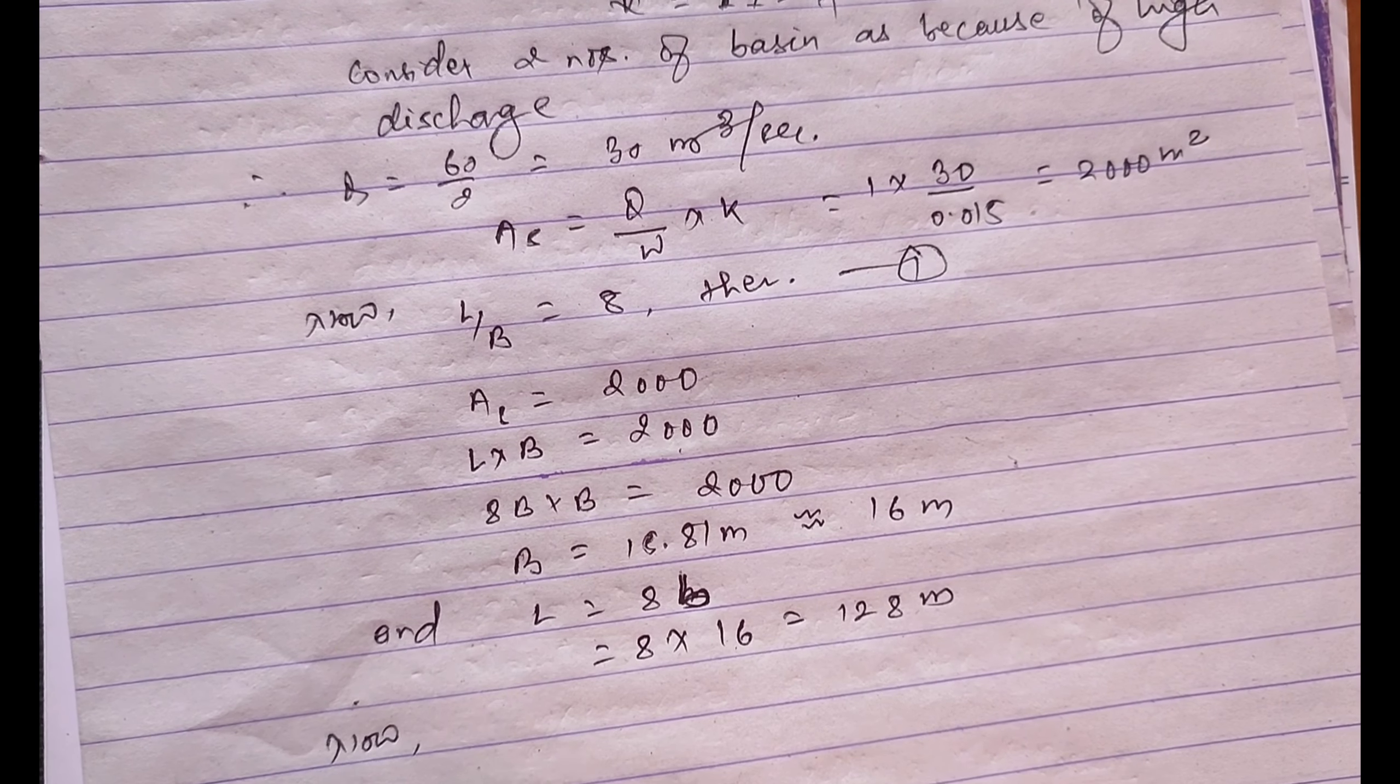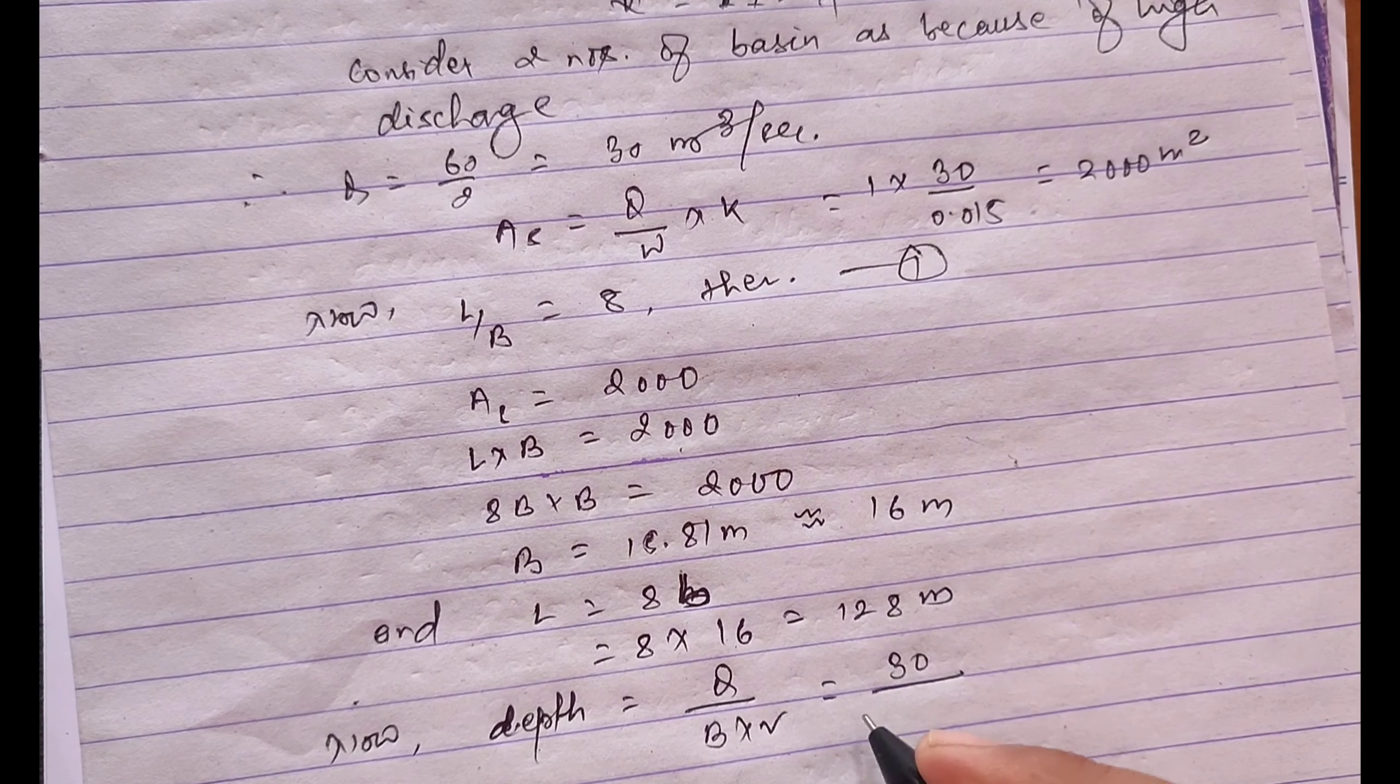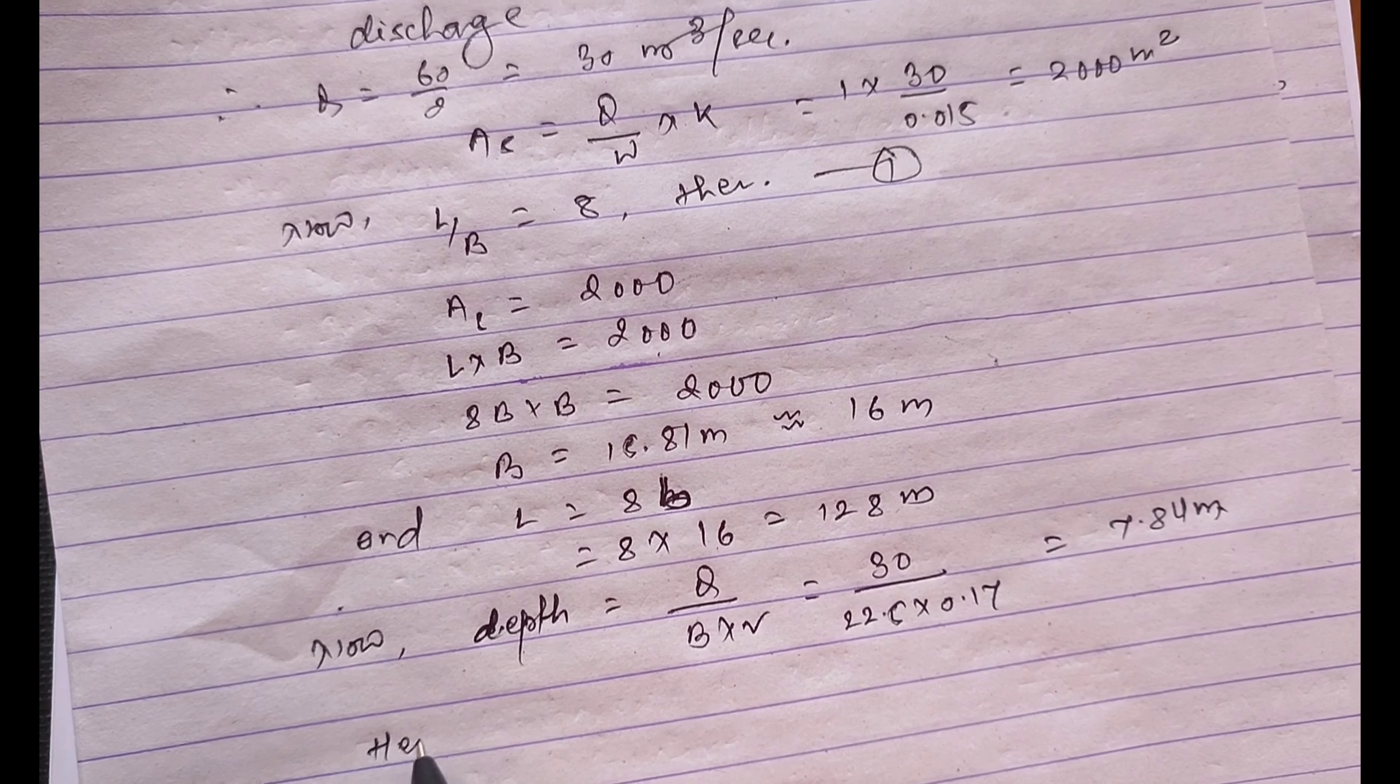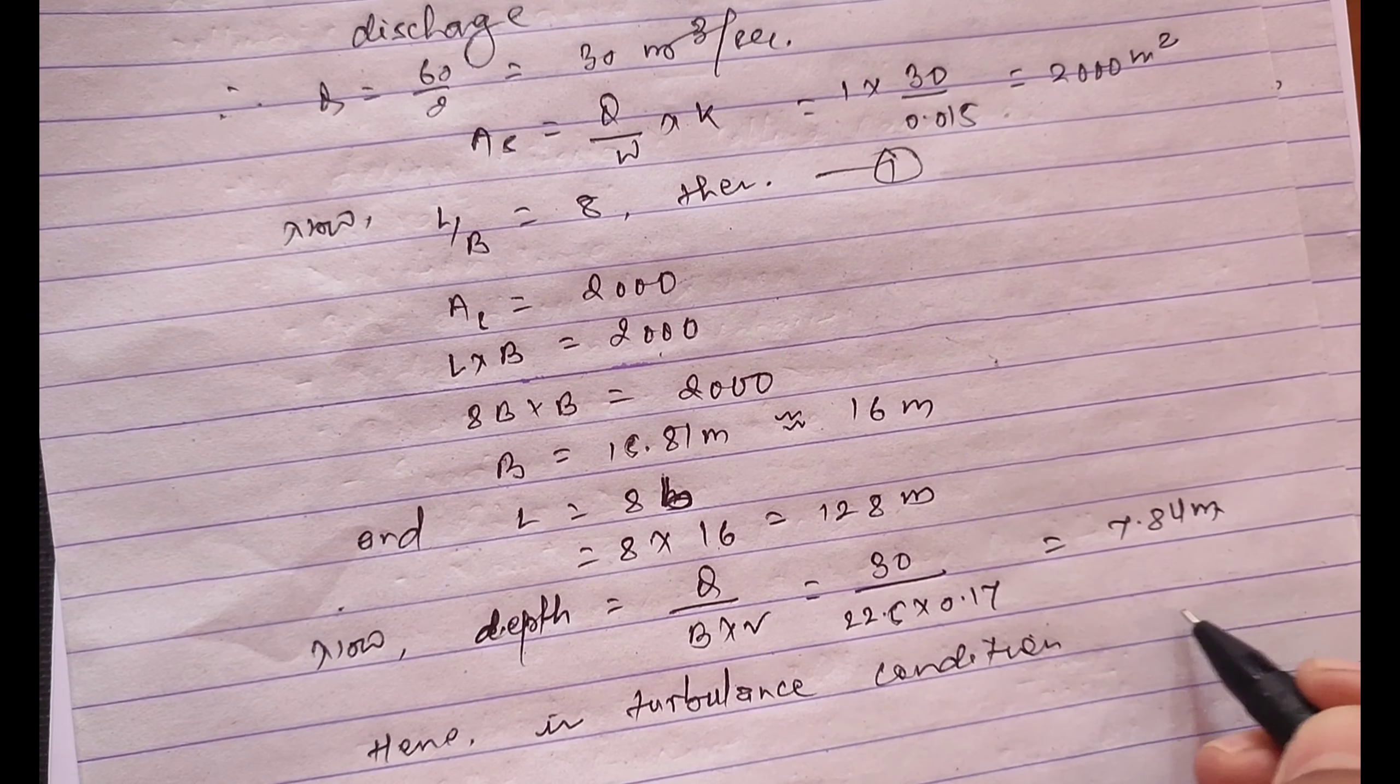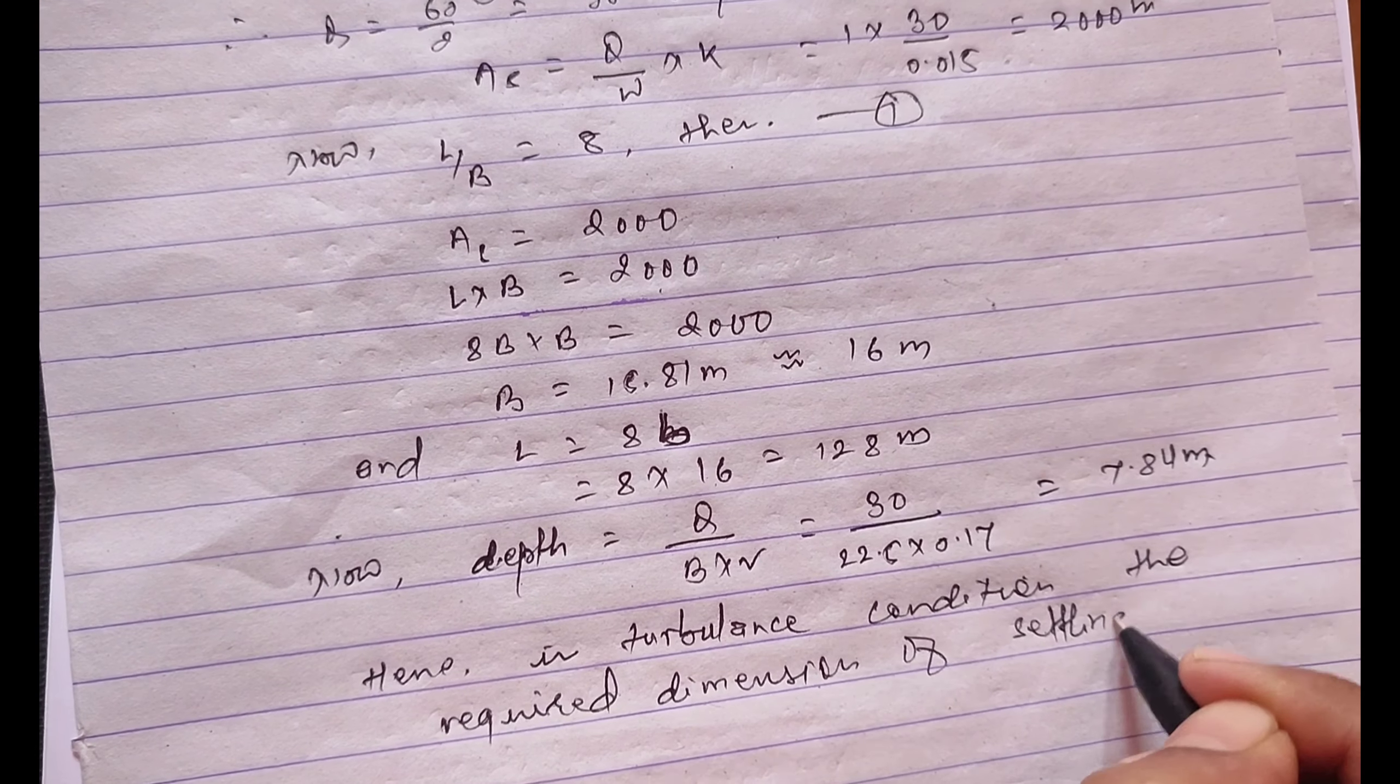Now we'll go for the depth. Depth equals Q divided by b times v equals 30 divided by 2.5 times 0.17 equals 7.84 meter is the depth. Hence in turbulence condition the required dimension of settling basin is 90 meter times 22.5 meter times 7.84 meter.